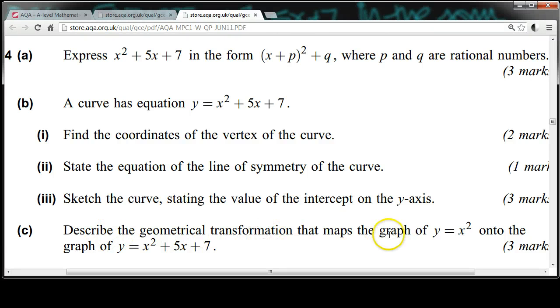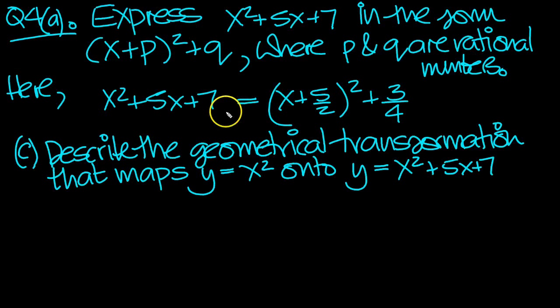Describe the geometrical transformation that maps the graph of y equals x squared onto the graph of y equals x squared plus 5x plus 7. So here's what we've got then.